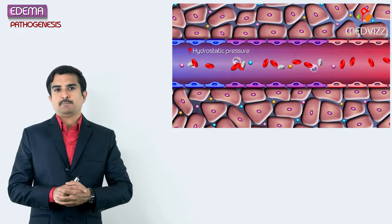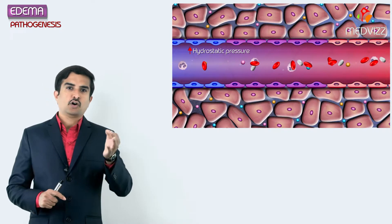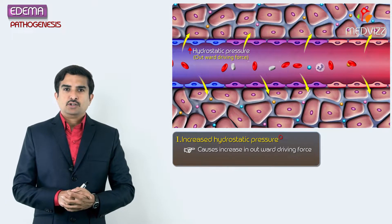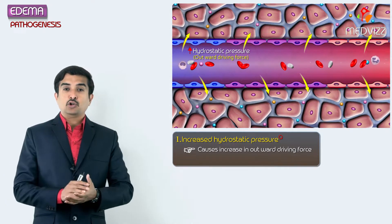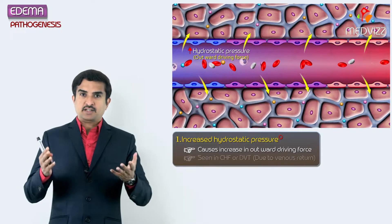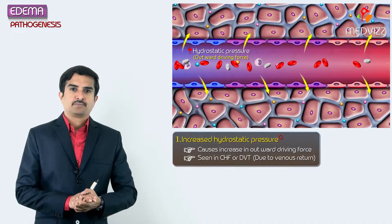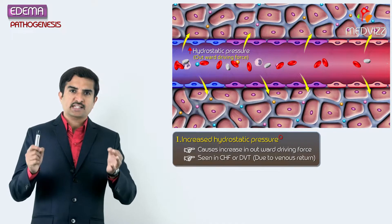Let us talk about the pathogenesis of edema. First, what happens when there is an increased hydrostatic pressure? Whenever there is an increased hydrostatic pressure, it causes an increase in the outward driving force. This is mainly seen in deep vein thrombosis or in congestive heart failure, and it is mainly due to impaired venous return.